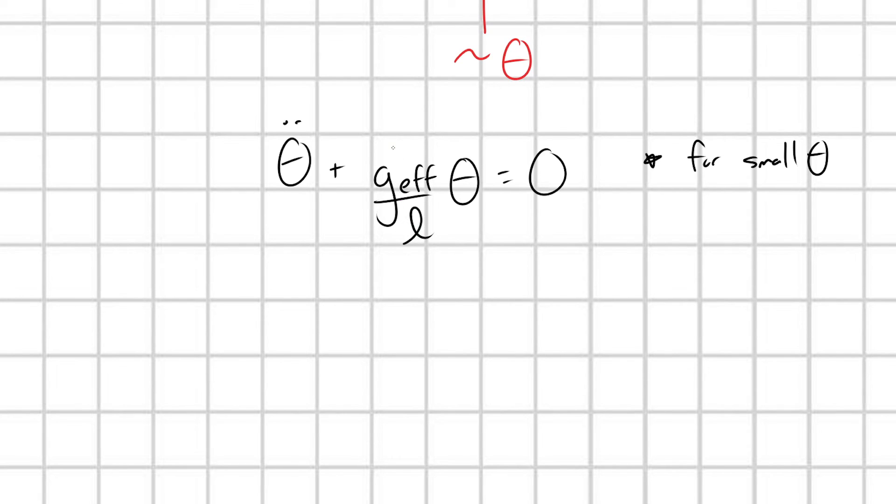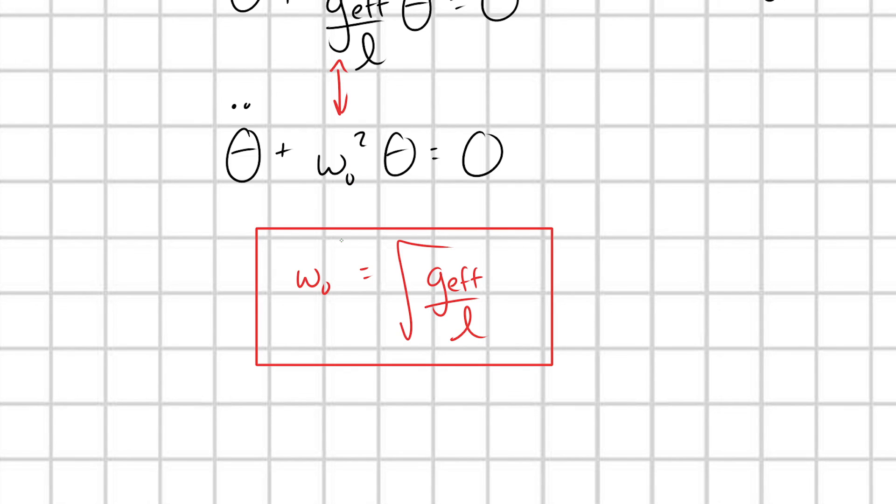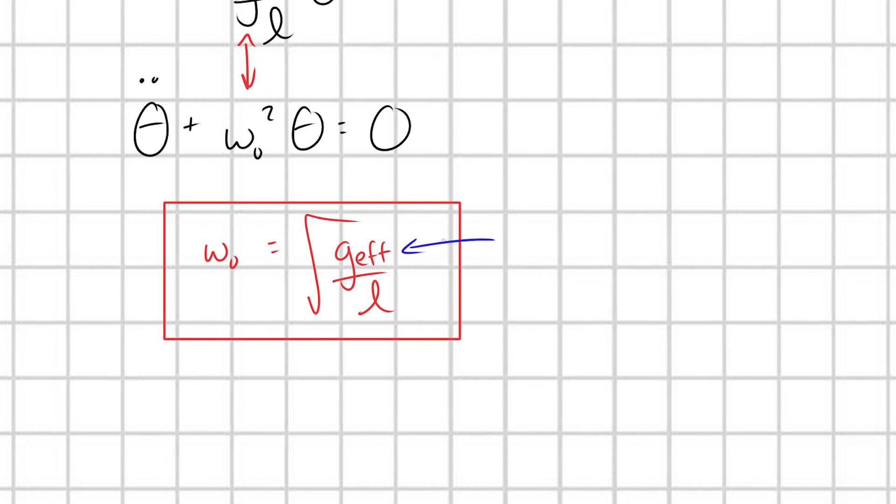What would our angular frequency be of this pendulum? Well, we would compare this with the general form of a simple harmonic oscillator, theta double dot plus omega naught squared theta is equal to zero. And we'd be able to pair up here, that our angular frequency omega naught is going to be equal to square root G effective over L. And we can see here that the arc that this pendulum is going to trace is going to be in essence exactly the same regardless of if it's in an accelerating elevator or not. But what's different is the actual size of this angular frequency. We're going to get a higher angular frequency because this G effective is equal to G plus A.